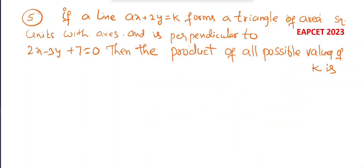Fifth question from TS MSet 2023: the line ax + 2y = 3 forms a triangle of area 3 square units with the coordinate axes, and is perpendicular to the line 2x - 3y = 2.